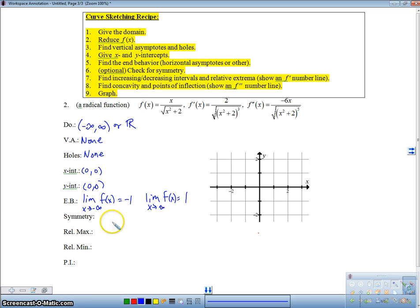Is there any symmetry? Well, notice here we've got an even function on the bottom and an odd function on top. And an odd divided by an even is an odd function. That takes you back to pre-calculus. So we have an odd function. So our symmetry is around the origin. We have origin symmetry. All right, so this is all the pre-calculus stuff. Let's take a look at the calculus stuff.